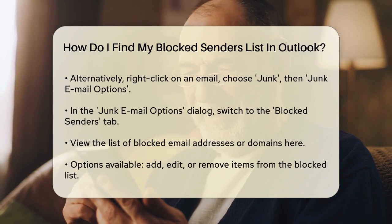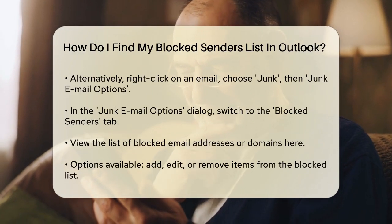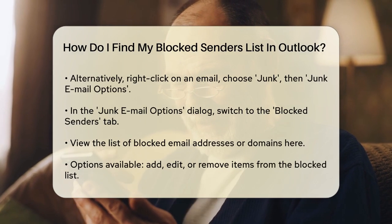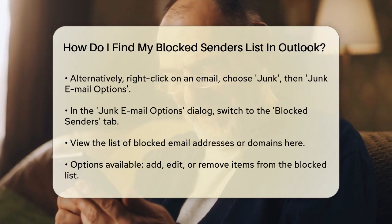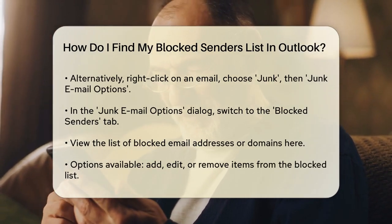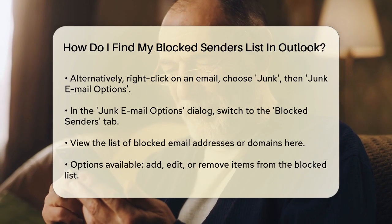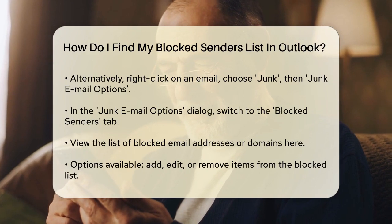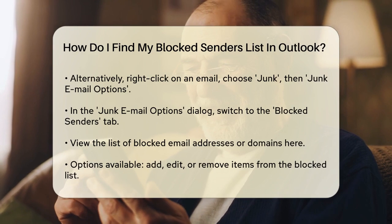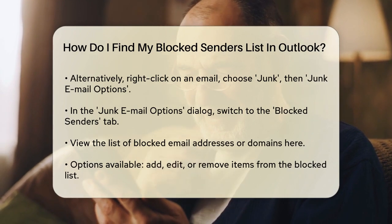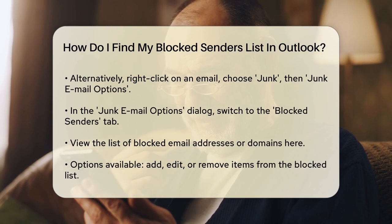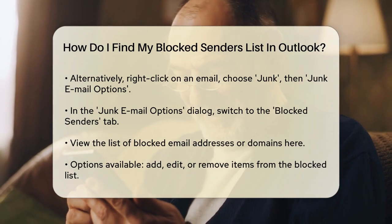Alternatively, you can right-click on any email and choose Junk, then Junk Email Options to get to the same place. In the Junk Email Options dialog box, switch to the Blocked Senders tab. This is where you'll see a list of all the email addresses or domains that you've blocked. Here you can view, add, edit, or remove items from the list. You can also import or export this list as a file if needed.